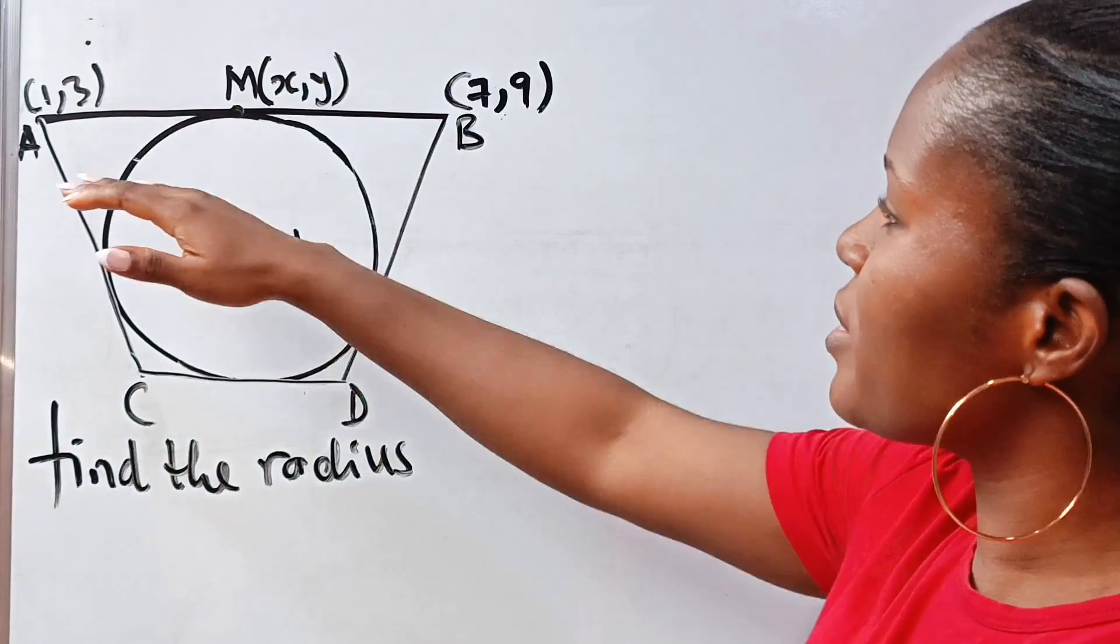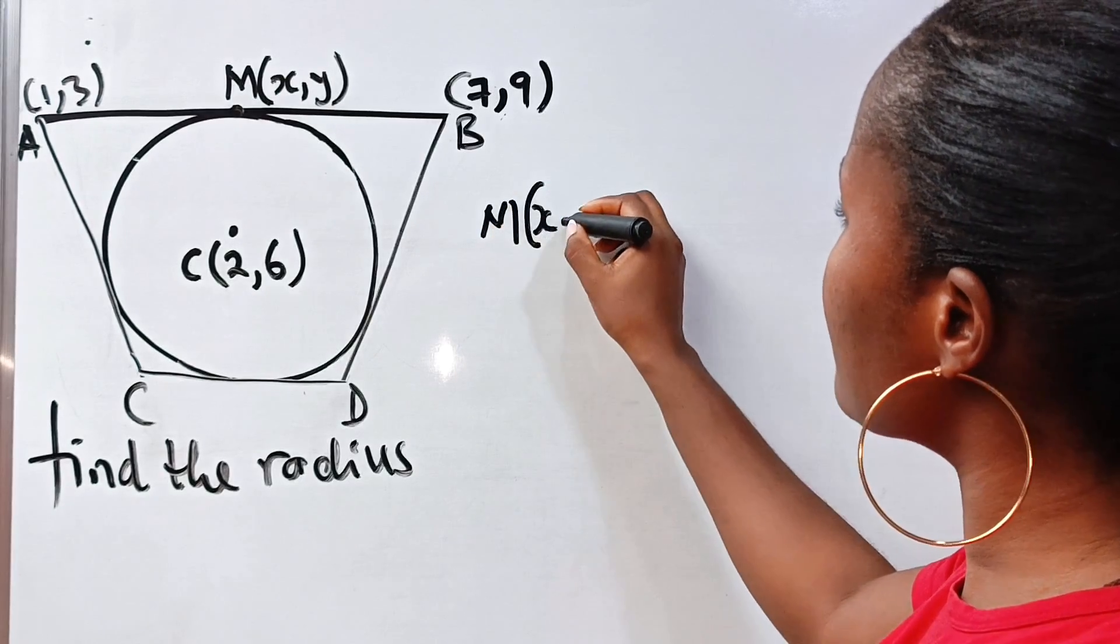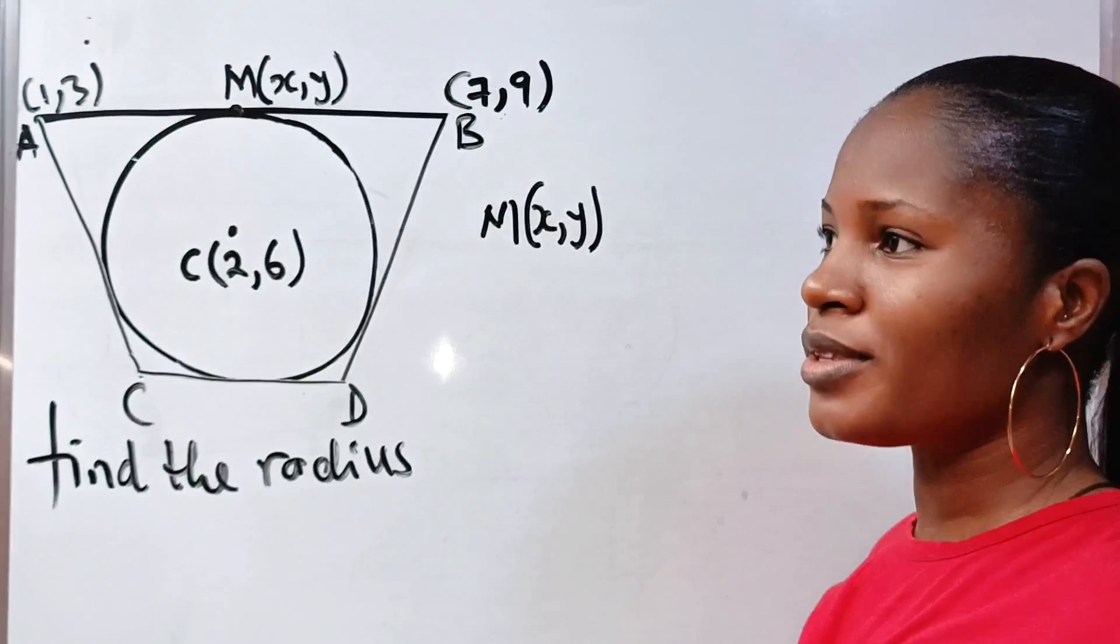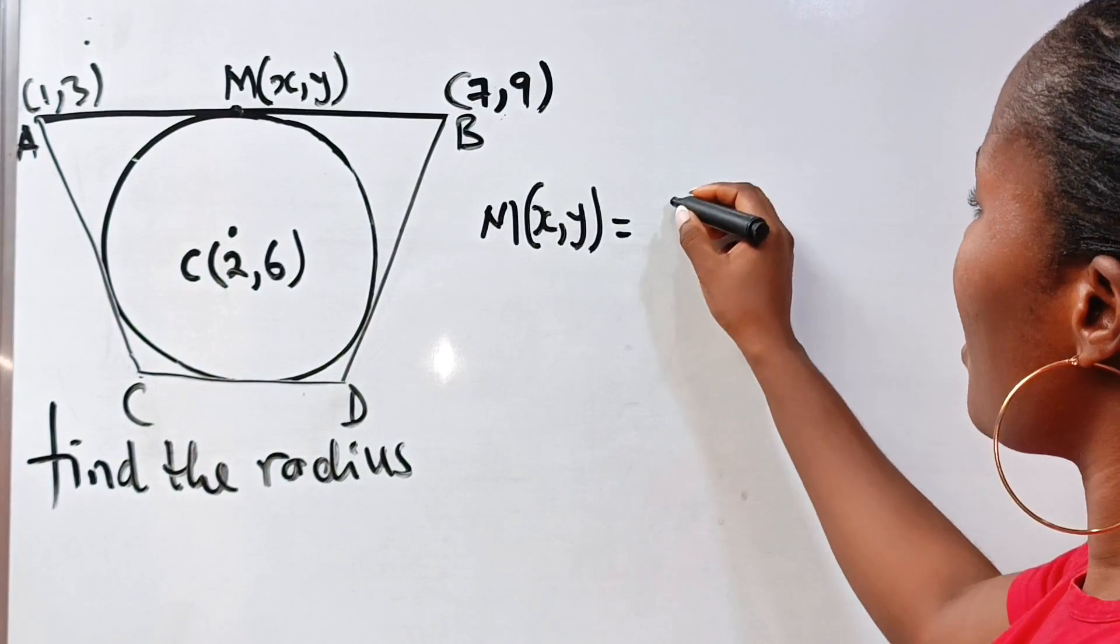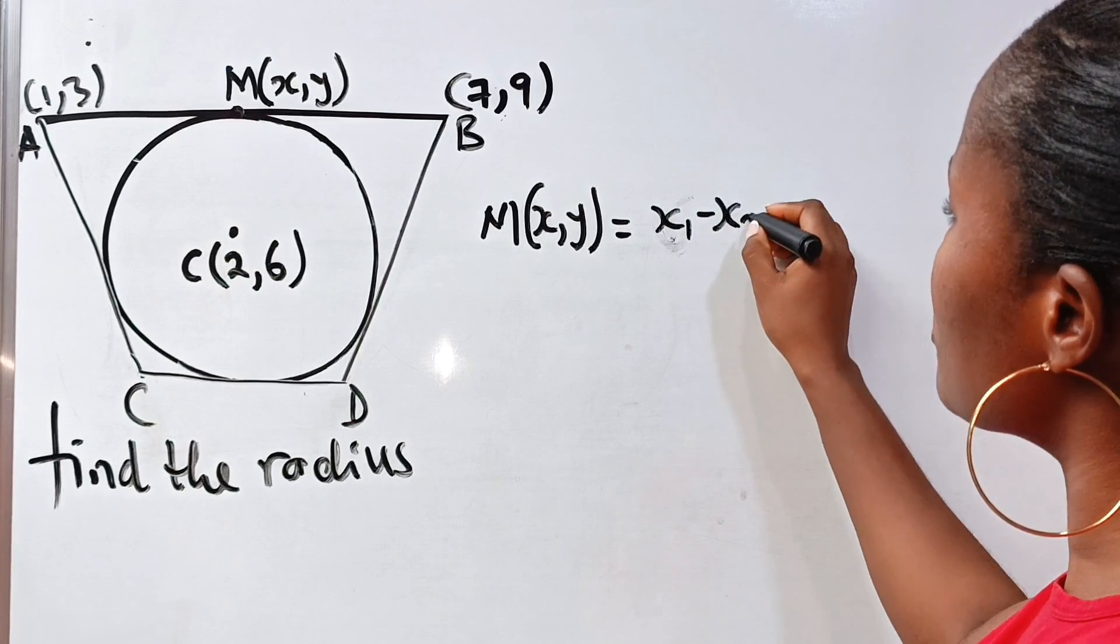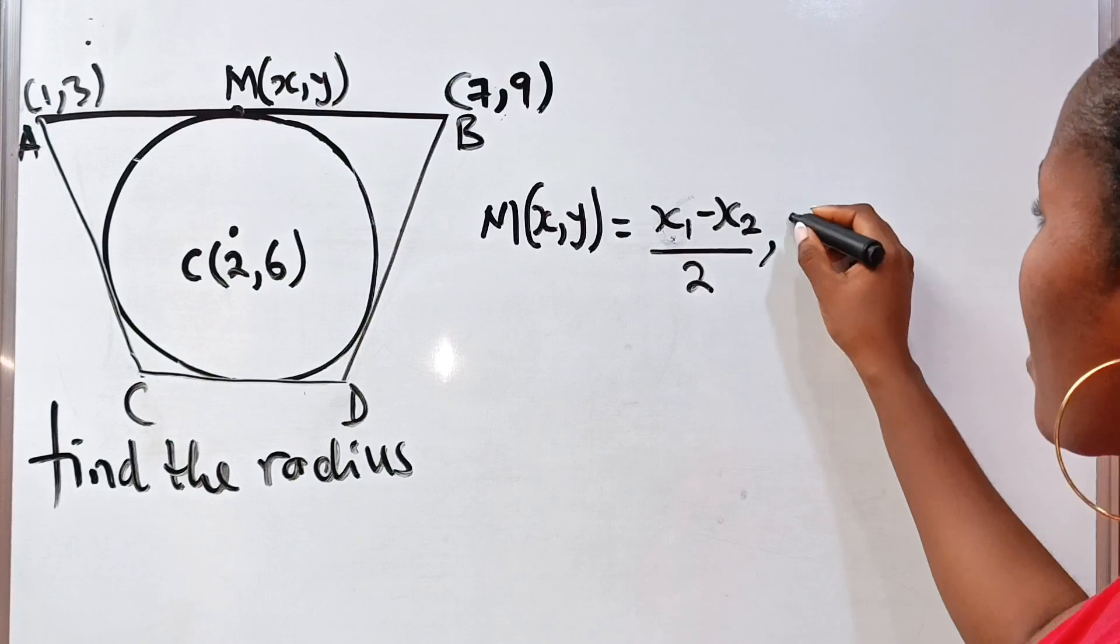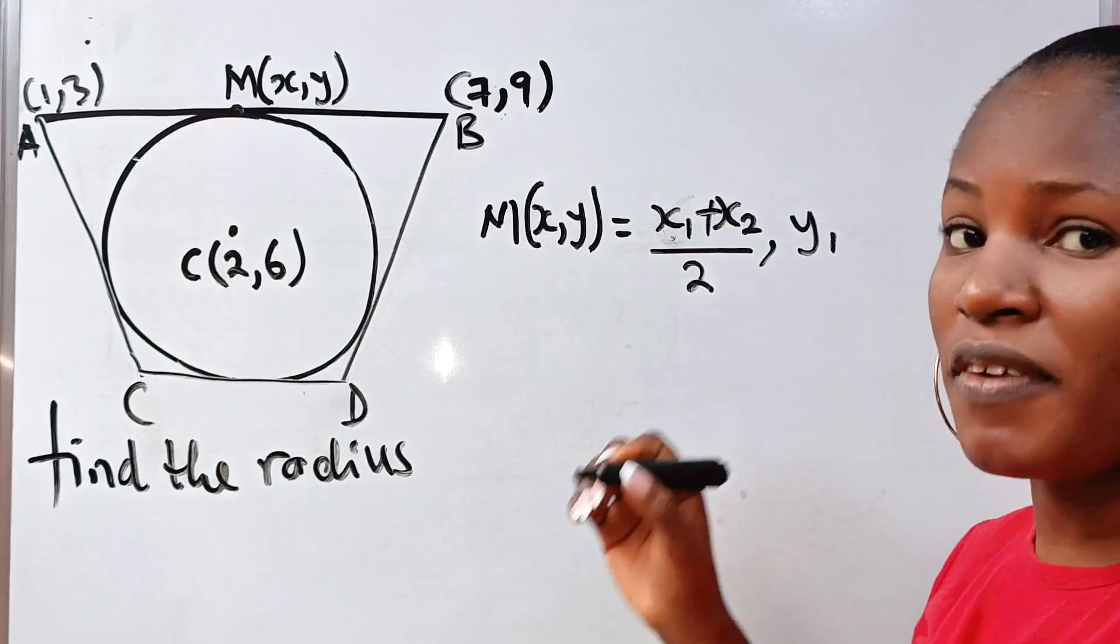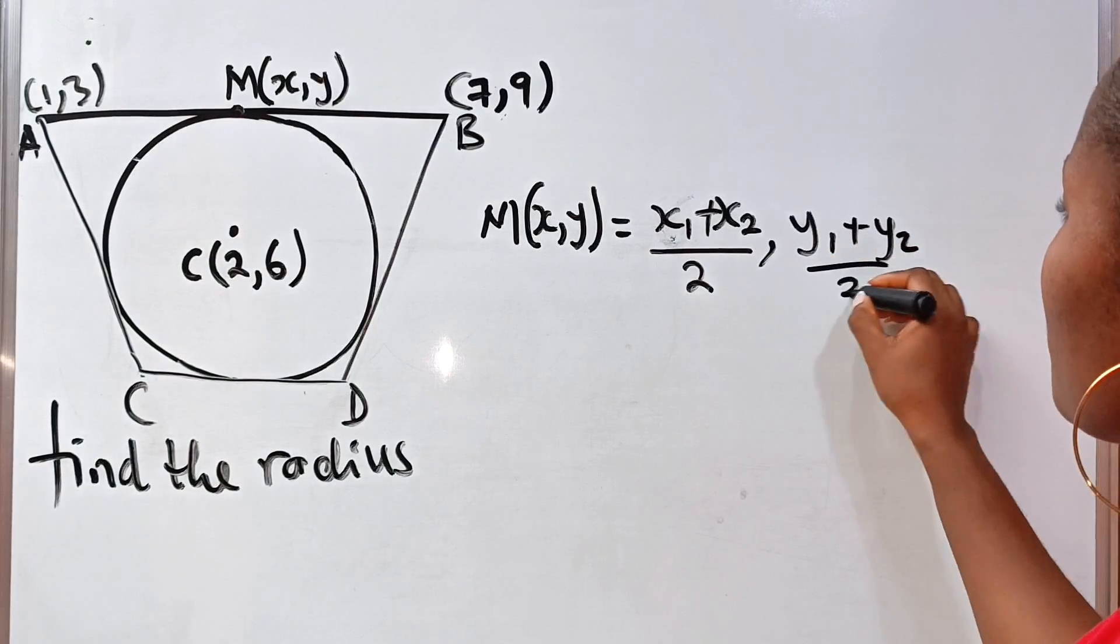The midpoint of a line M of x, y, this is the x-coordinate and this is the y-coordinate, is equal to x1 plus x2 divided by 2, comma y1 plus y2 divided by 2.